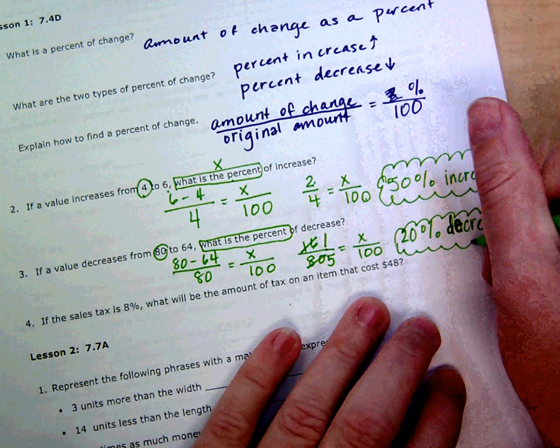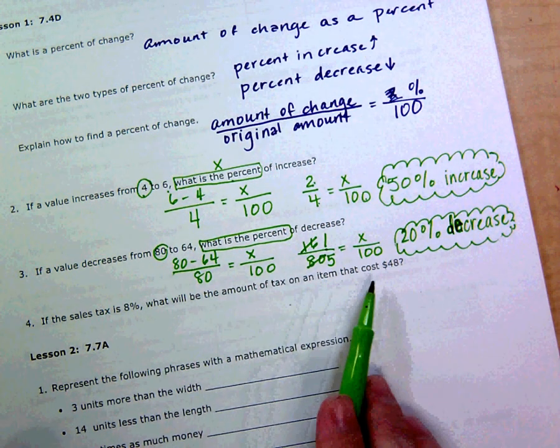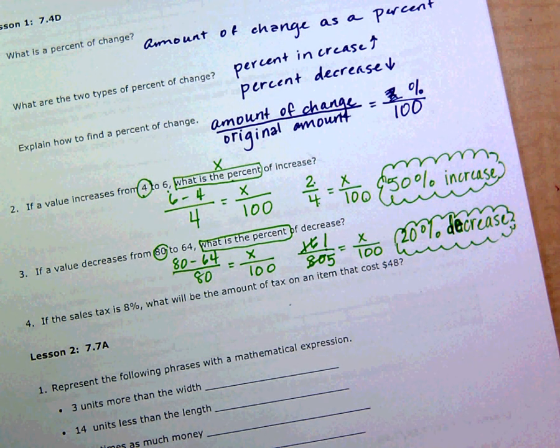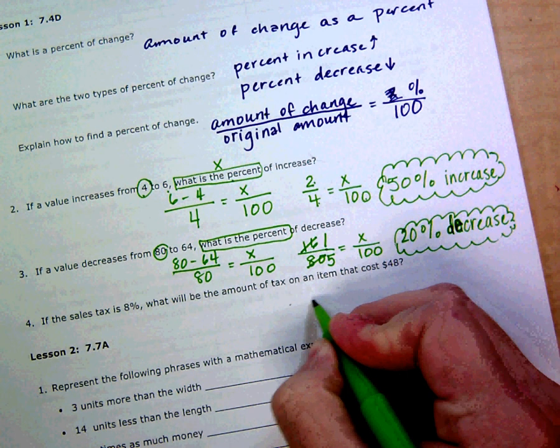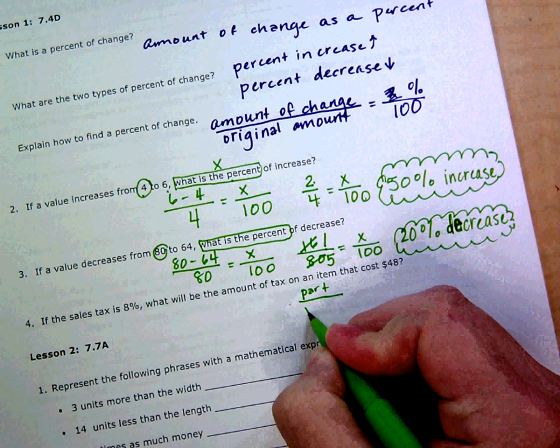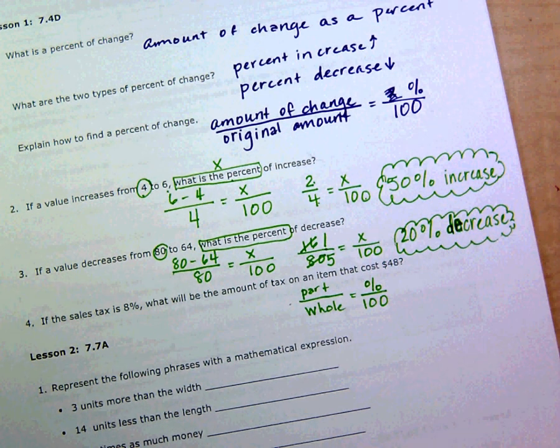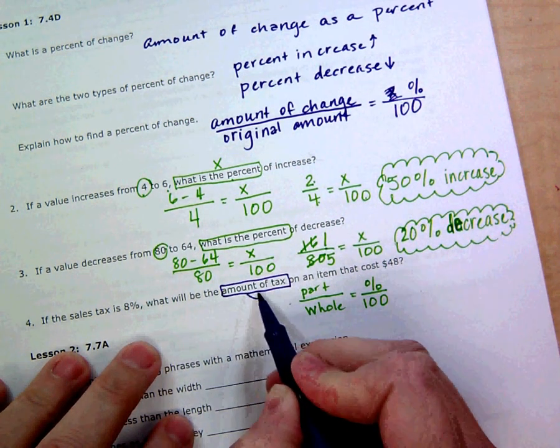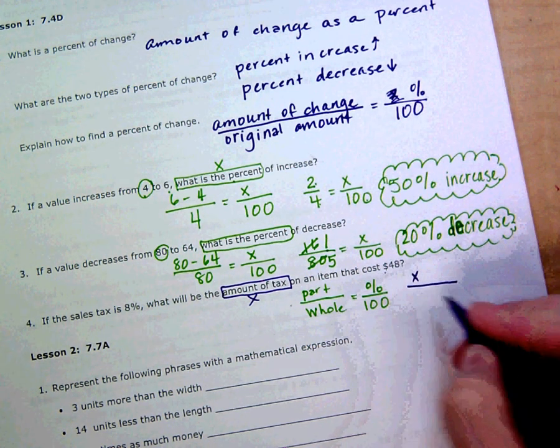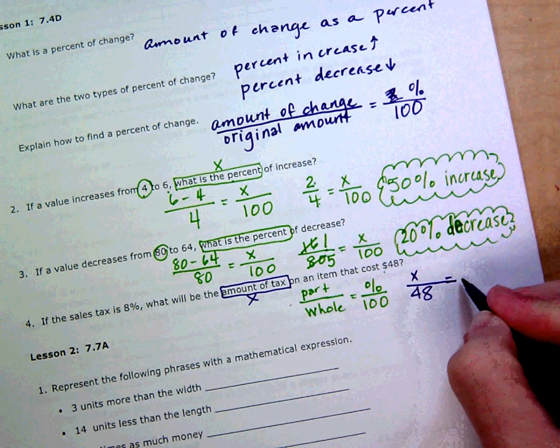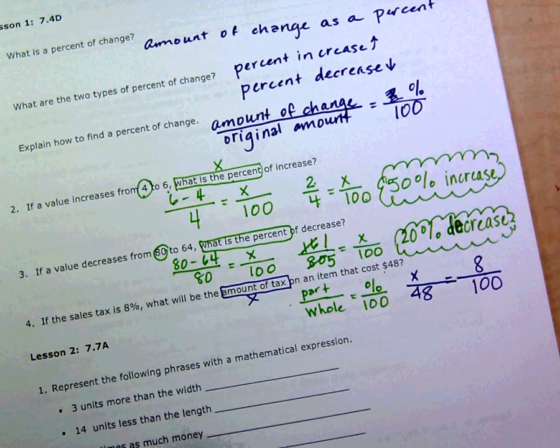If the sales tax is 8%, what will be the amount of tax on an item that costs $48? The amount of tax is our unknown, that's our x. So the part is x, the whole is the item cost, $48.